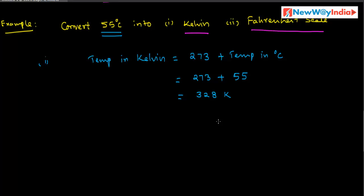Now we have to convert the centigrade measurement into Fahrenheit scale. The relation between them is: C divided by 5 is equal to F minus 32 divided by 9. This is the relation between Celsius measurement and Fahrenheit measurement.